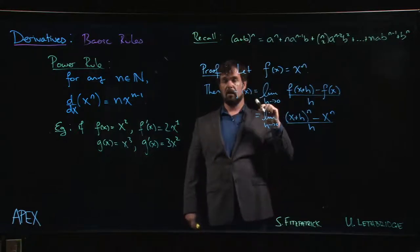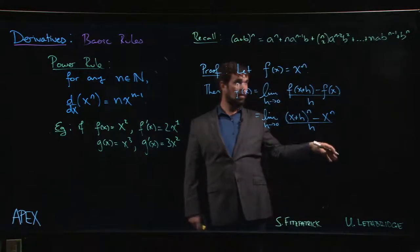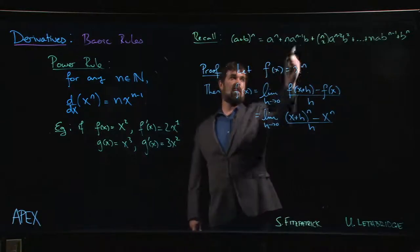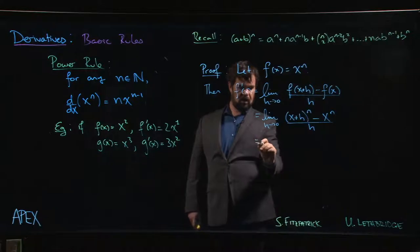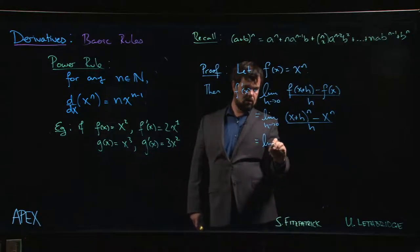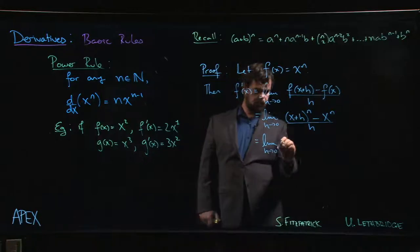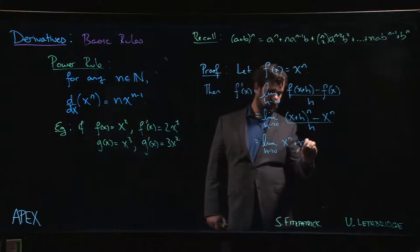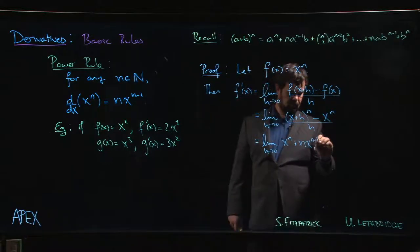I threw it up here as a reminder. You don't need to remember all the binomial coefficients for this proof. You just need to remember that this is how it starts, because what we're going to get is that this is the limit as h goes to 0 of x to the n plus n x to the n minus 1 times h.